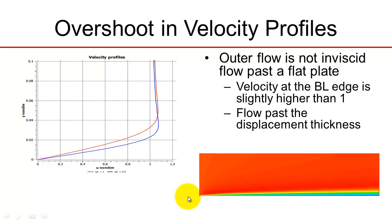However, if you think about the outer flow, as it's coming along, it's getting displaced by the boundary layer — so it's going to accelerate. If you think about the velocity profile as you go along a line, it's zero at the wall, then it increases, and at the edge of the boundary layer it's not 1 — it's slightly higher than 1 because of that acceleration effect.